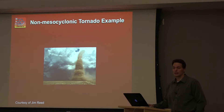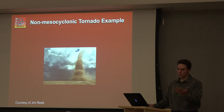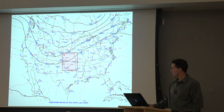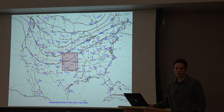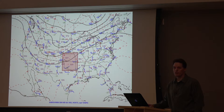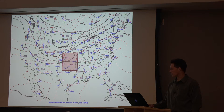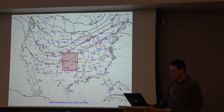We're going to look at a non-mesocyclone tornado example case to show what you'd be looking for when forecasting something like this, focusing on south central Kansas. This is a late summer case — end of August — with a shortwave trough approaching the central high plains, but the flow is primarily to the northwest of the area we're focusing on, which is closer to Wichita, Kansas.